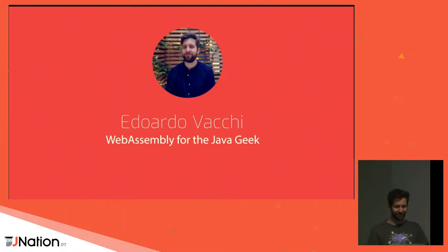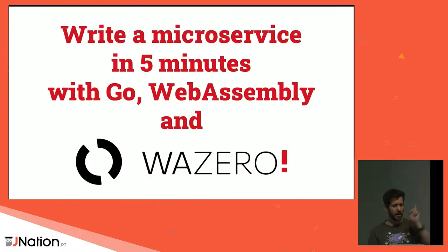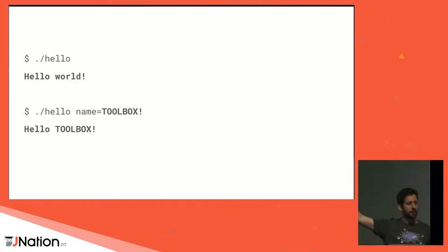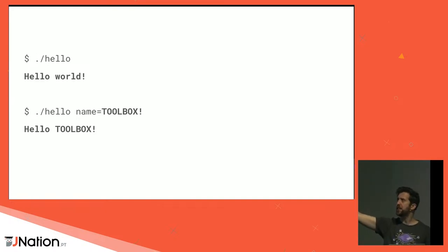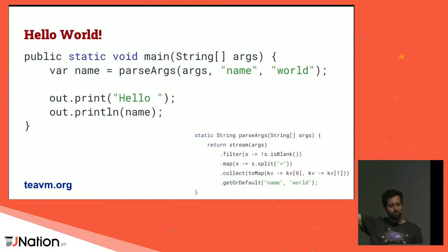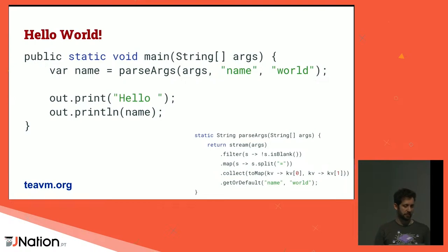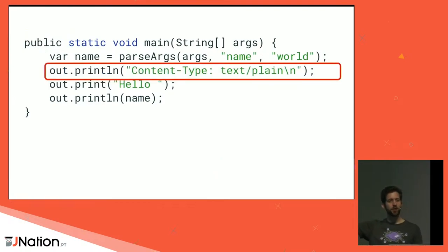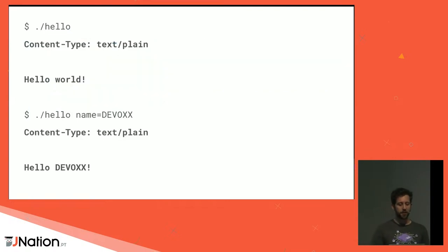Bonus demo: write a microservice in five minutes with Go, WebAssembly, and Wazero. Suppose you have a simple Hello World program — you write 'hello' and it prints 'Hello World,' or 'hello [name]' and it prints 'Hello [name].' And then you add this weird line that looks like an HTTP header — Content-Type: text/plain. If you compile and run it, the program outputs that header along with the Hello World message. And I can run this directly using Wazero — this is already WebAssembly running.